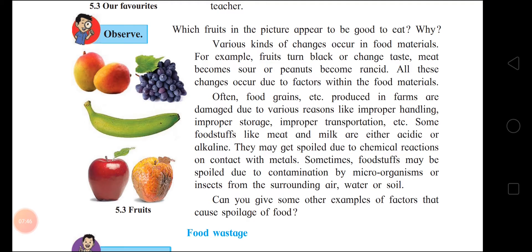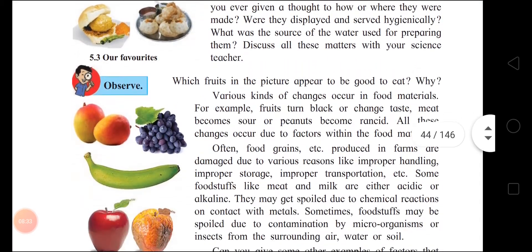Let me repeat the factors responsible for food spoilage: natural causes — fruits or their skin turn black and may give out a bad odor; man-made causes — storing in a damp place, problems during transportation, improper storage, and wrong handling; properties of foodstuffs — milk and meat may be acidic or alkaline and get spoiled early; chemical reaction — some foodstuffs undergo chemical reactions on contact with metals; microorganisms and insects — contamination from surrounding air, water, or soil.